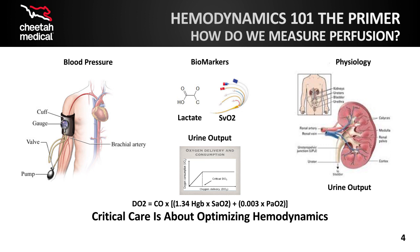Clinicians sometimes also look directly at organ function to assess signs of inadequate perfusion. For example, kidney function and urine output, or coronary ischemia. Ultimately, perfusion is all about oxygen delivery and removal of waste product and toxins. Adequate hemoglobin and oxygen saturation are, of course, critical for adequate tissue oxygen delivery. Some clinicians like to include these concepts when assessing hemodynamics and like to use oxygen delivery calculations.